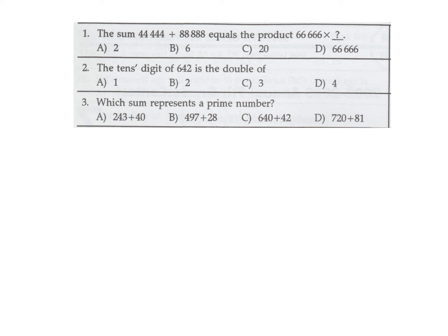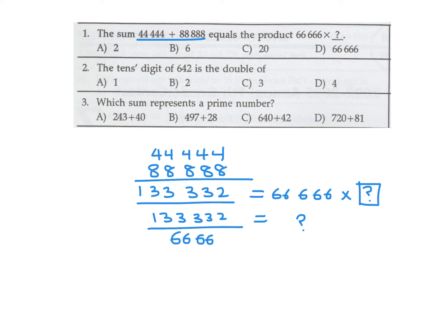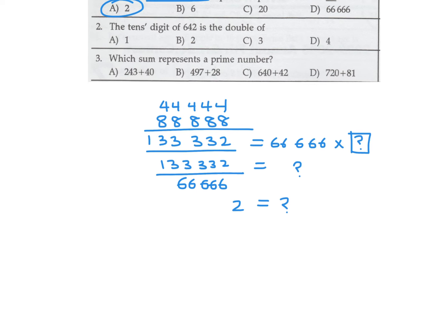The sum 444 plus 888 equals the product 66666 times some number. First, let's add 444 and 888; you get 1333.2. They say this number equals 66666 times some unknown. You can figure out that number by taking 133332 and dividing by 66666, and when you do you find the question mark equals 2, so the answer is B.